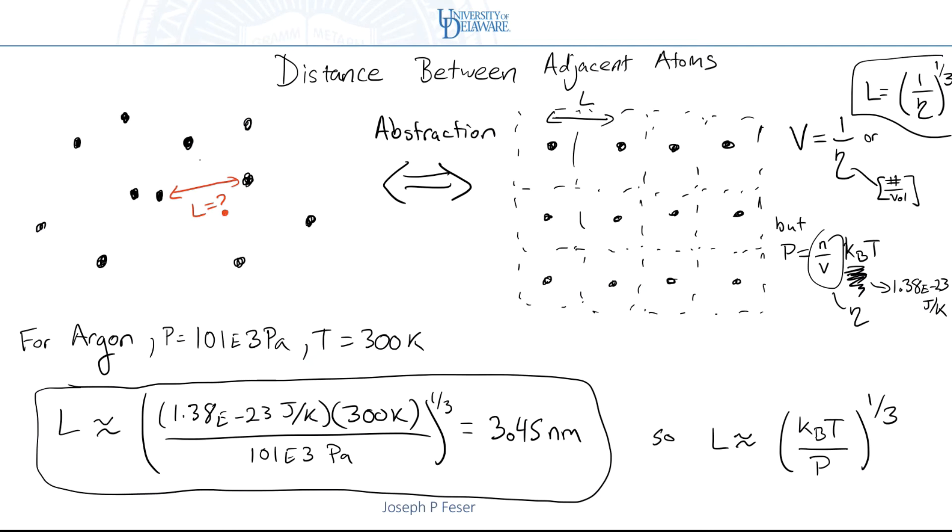Alright, so the next thing I want to do, I'm going to cut this video. The next thing I want to do is calculate how far an atom travels before it collides with another atom. So far we've figured out what the size of an atom is and we know how close they are to one another, but we haven't really talked about how far they travel before they hit one another. So let's talk about that because that turns out to be a very different number.